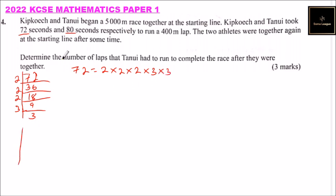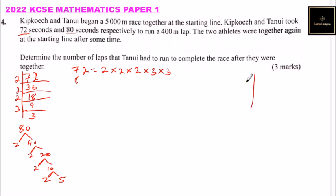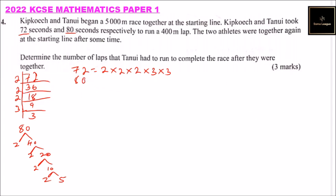Then we have 80. We can use the other method: 80 divided by 2 is 40, divide by 2 is 20, divide by 2 is 10, divide by 2 is 5. So we have 80 is equal to 2 × 2 × 2 × 2 × 5.